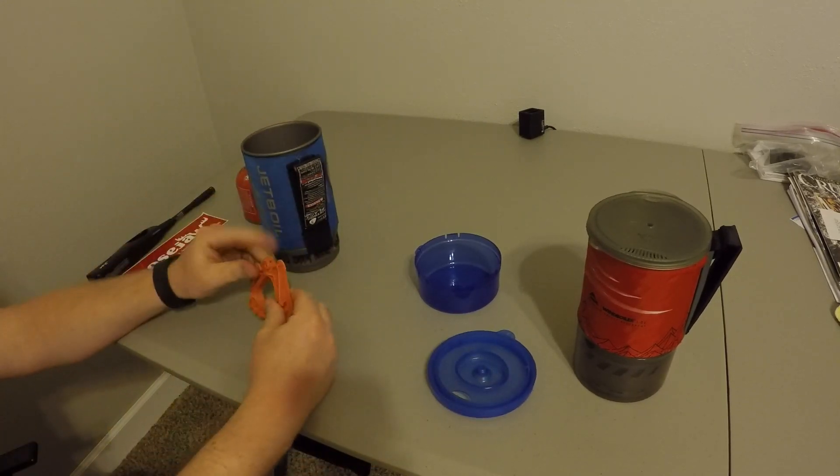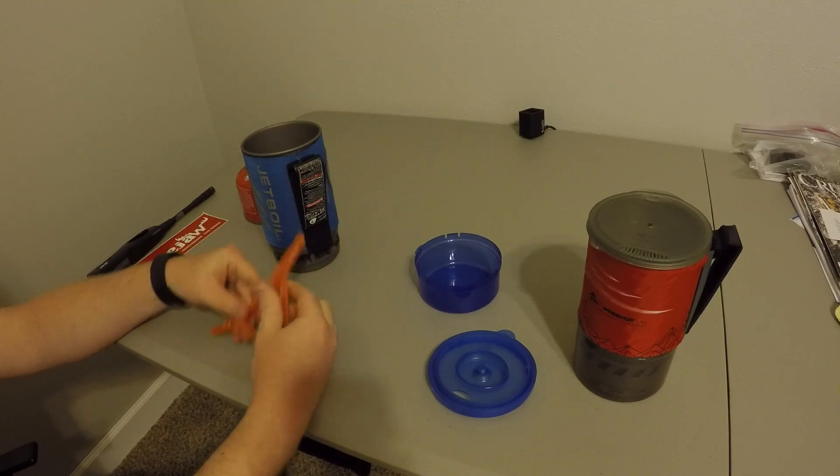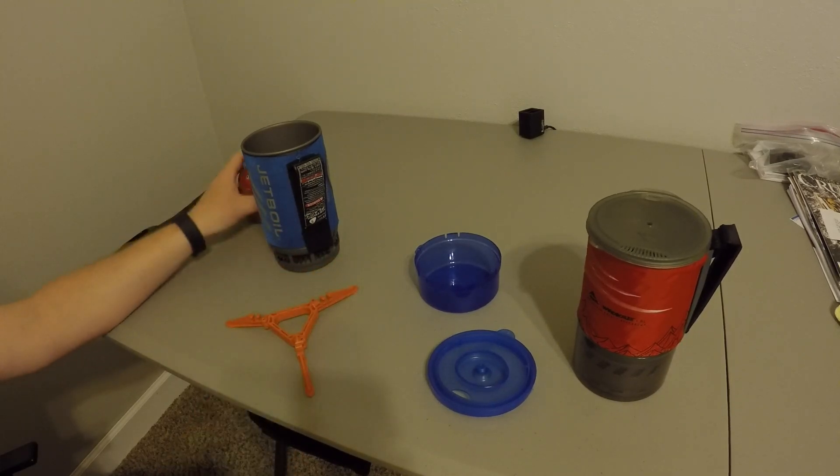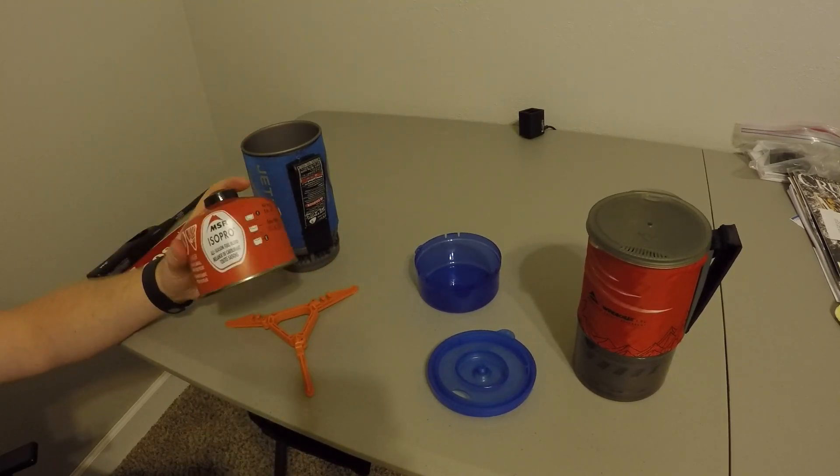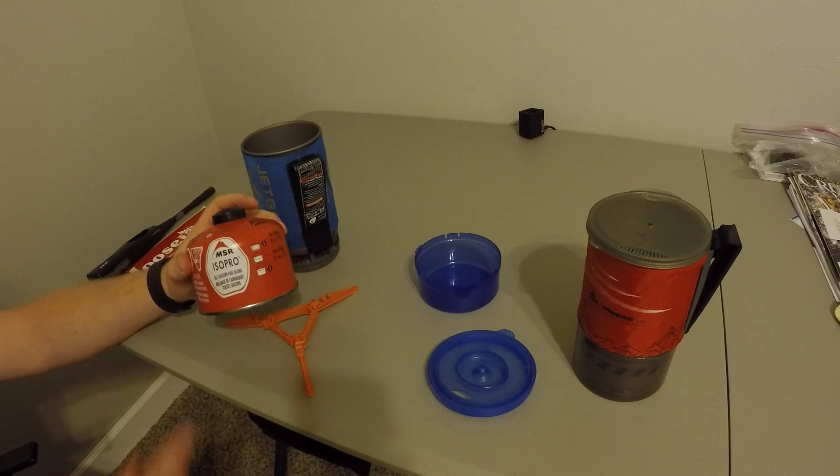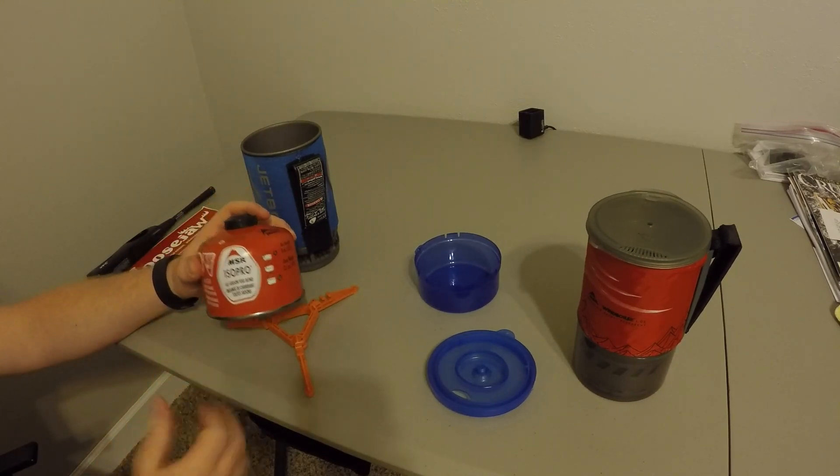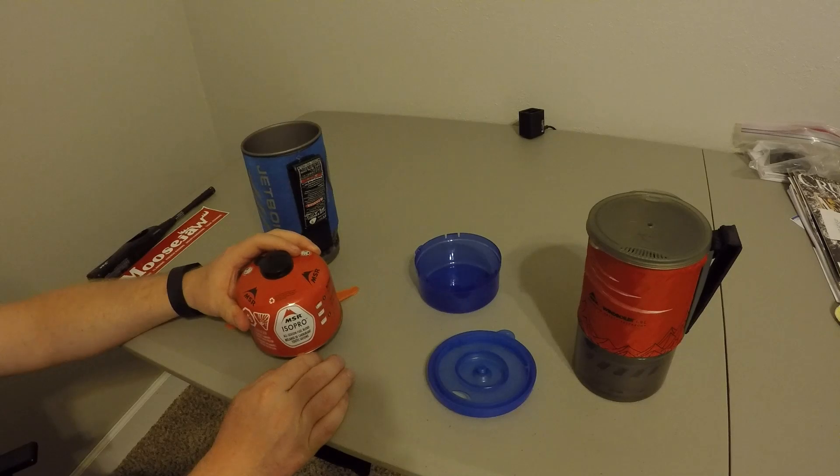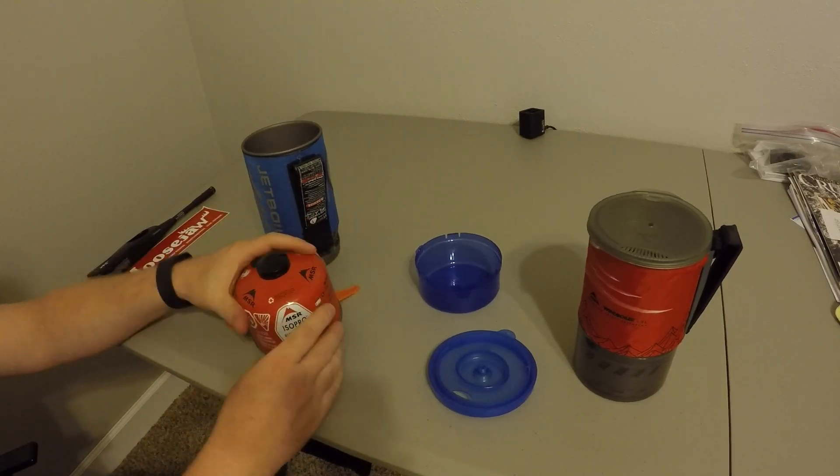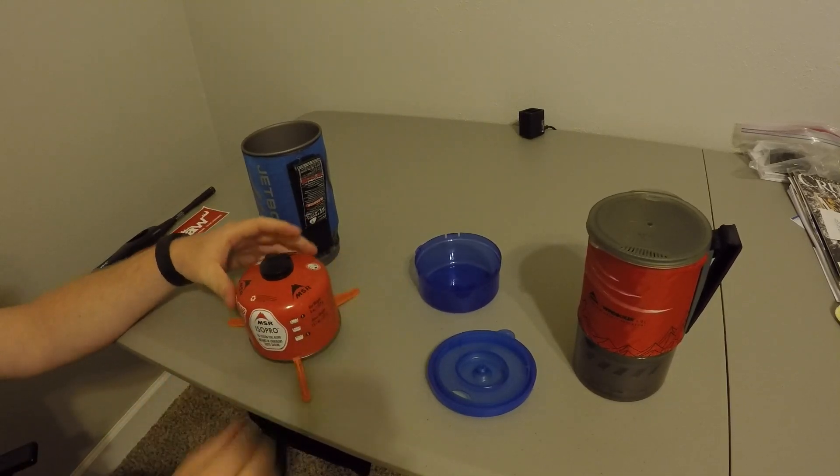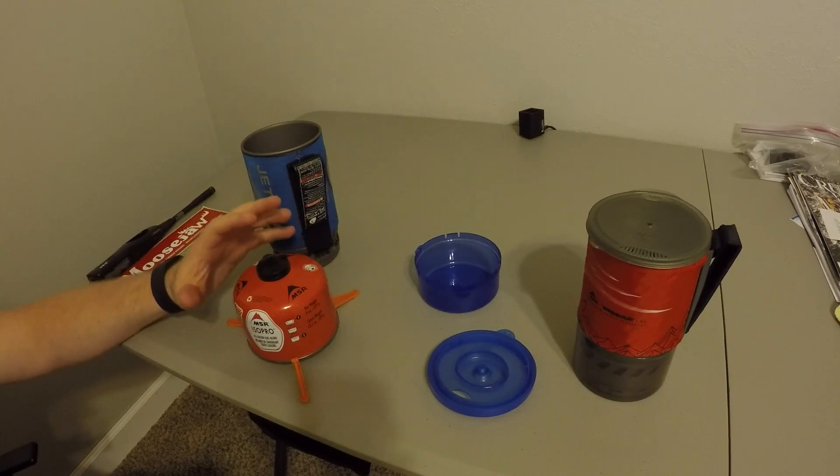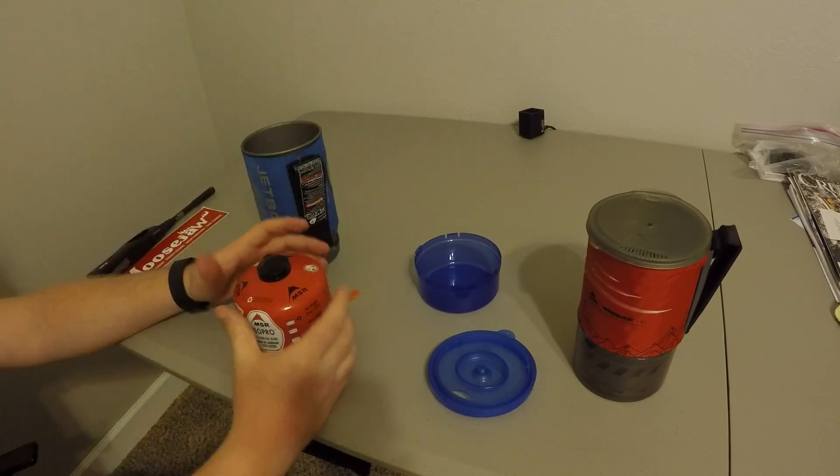So inside, you have a pot stand. And what that allows you to do is you can take your fuel canister. This one is an MSR isopure. Same type of fuel. You can buy it from a lot of different companies. But anyway, the pot stand is universal so that any size will fit in there. And it just adds a stable platform because your unit will all base itself off of this.